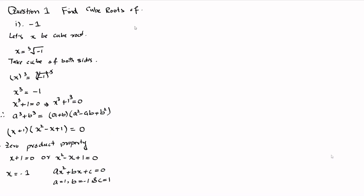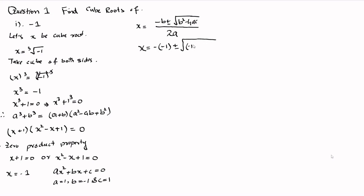The solution of a quadratic equation is given by x equals minus b plus or minus the square root of b squared minus 4ac, all divided by 2a. Inserting the values of a, b, and c, we have minus of minus 1, plus or minus the square root of minus 1 squared minus 4 times 1 times 1, divided by 2 times 1.